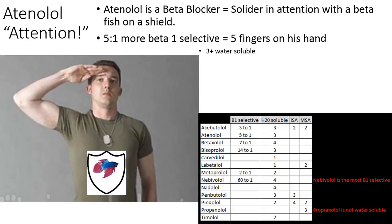Next we have atenolol. 'Aten' kind of sounds like 'attention,' so I chose a picture of a soldier standing at attention with a beta fish shield on his shirt — soldiers protect people. This is a beta blocker. This is five-to-one more beta-1 selective than beta-2, and soldiers have five fingers on their hand, so the five will help you remember that this is five-to-one more beta-1 selective.